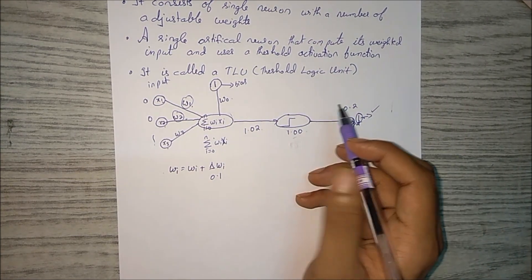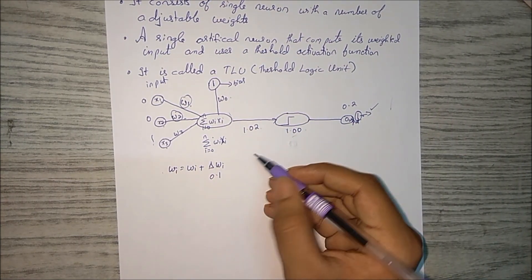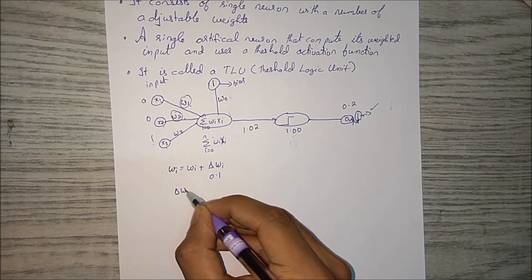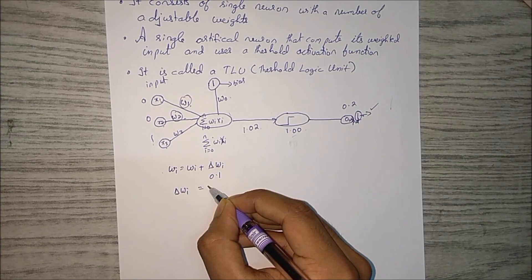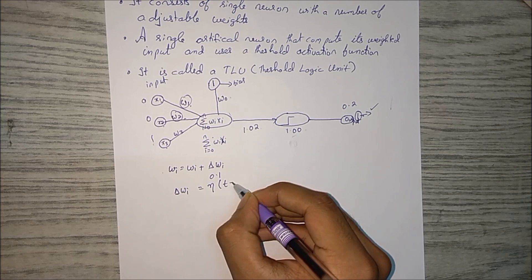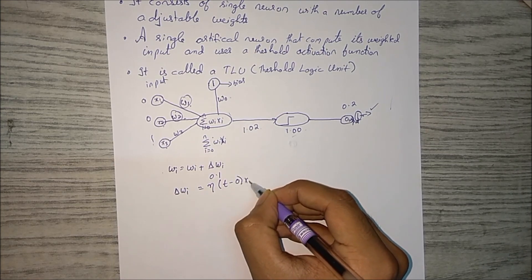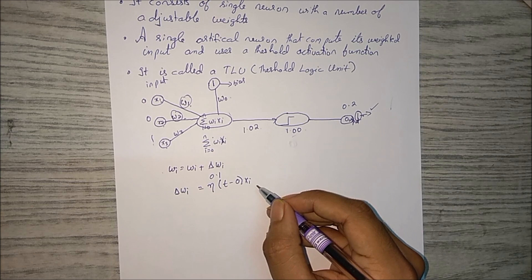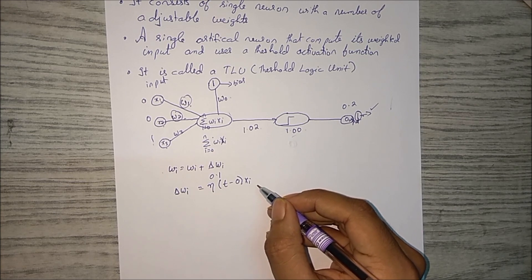So how much weight we have to increase is given by: delta wi equal to n into (t minus o) into xi. So what is t?